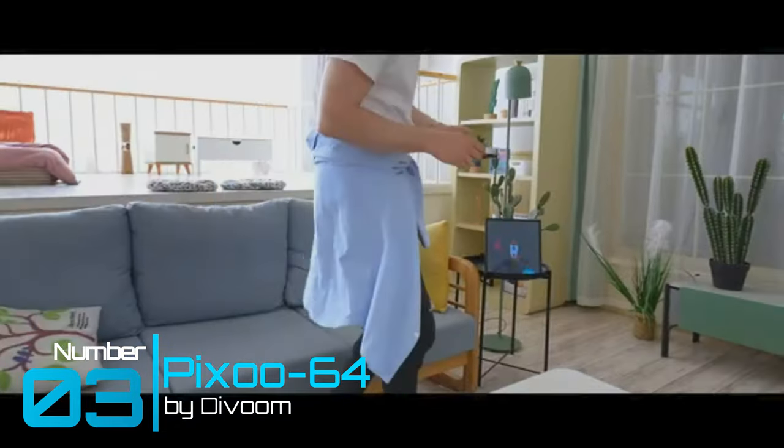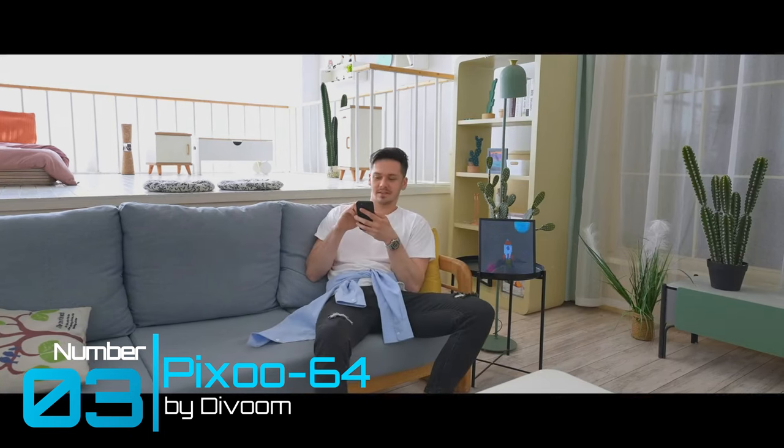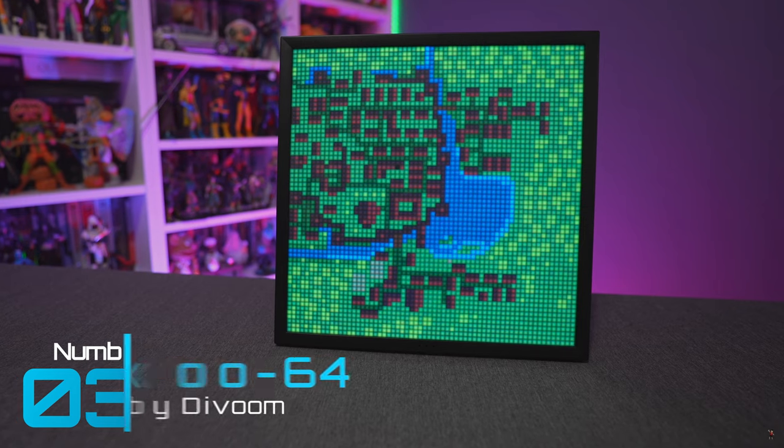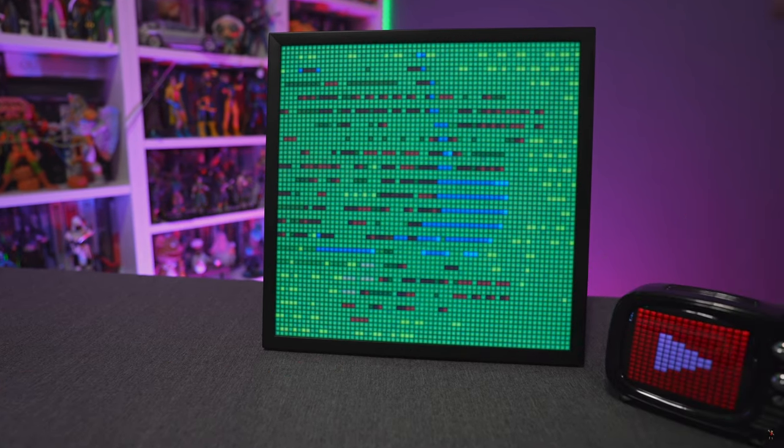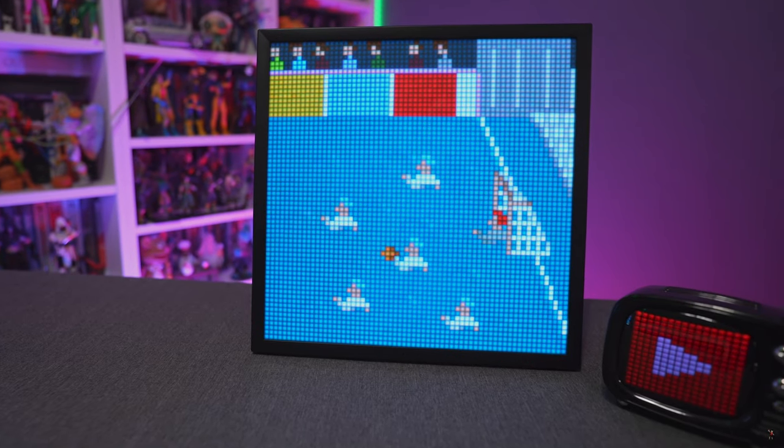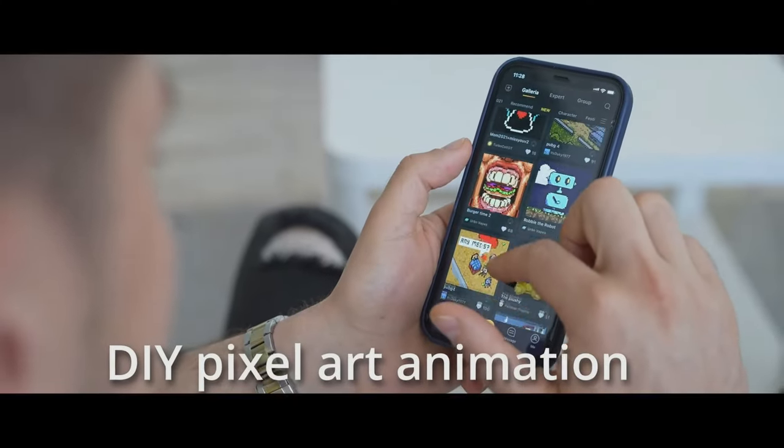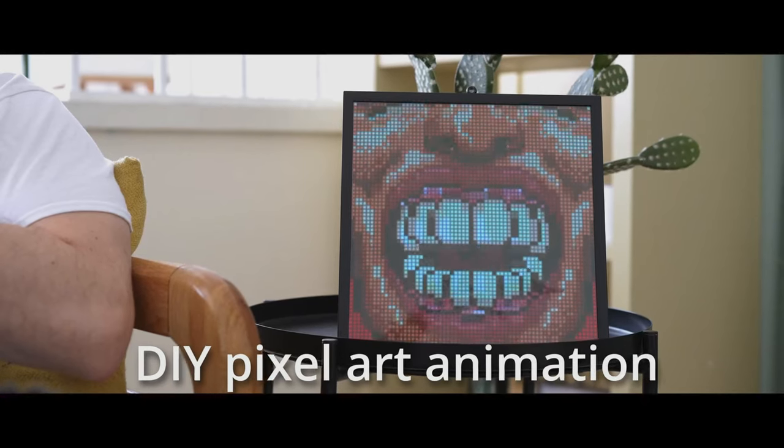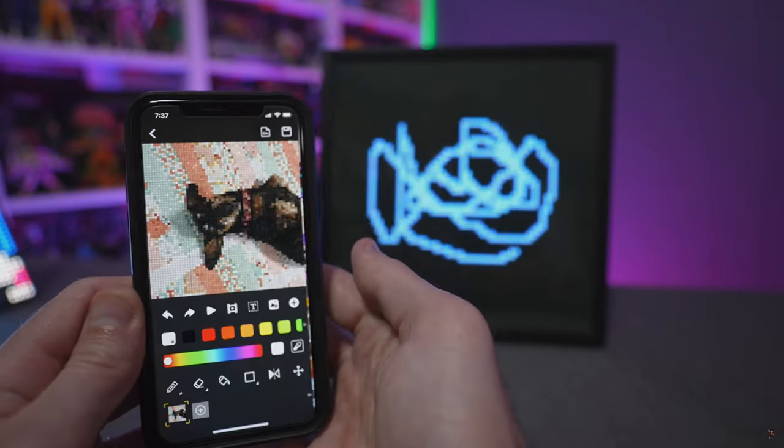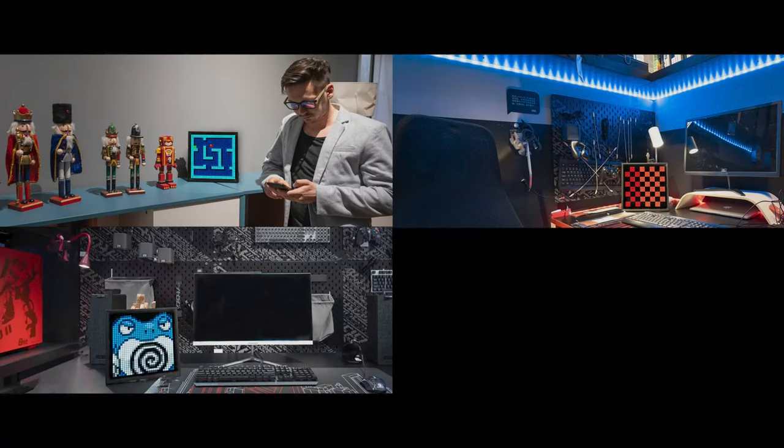And toy number three: Pixoo 64 by Divoom. This digital art display board features a 64 by 64 retro pixel layout to mimic that nostalgia 1980s video fashion. You can create your own images or use Divoom's extensive library to add classic still or GIF images to your Pixoo 64. You can even convert your personal pictures into pixel art directly.